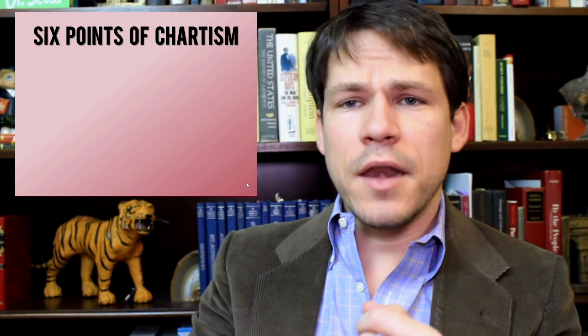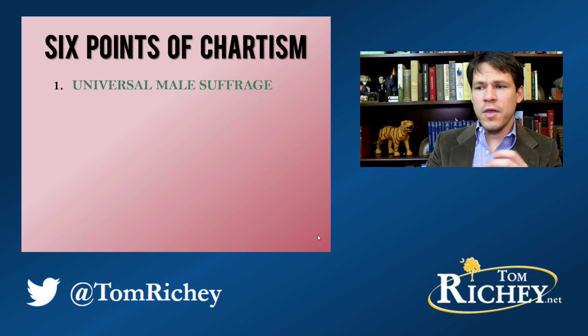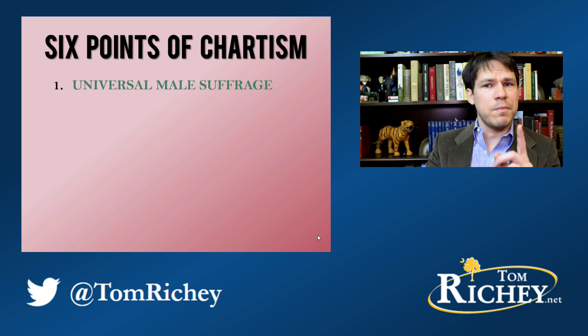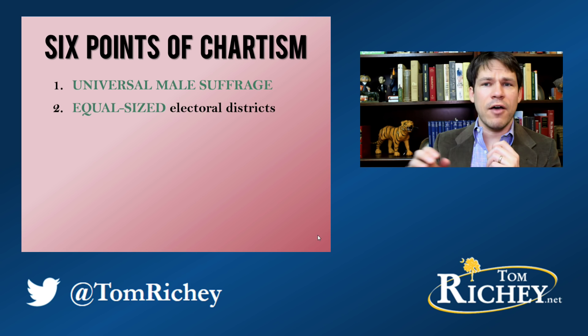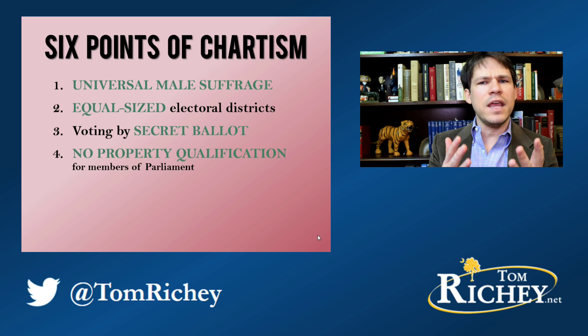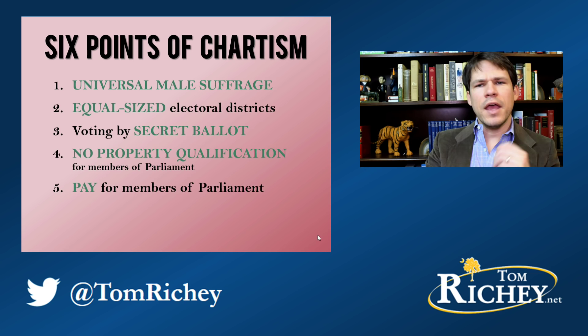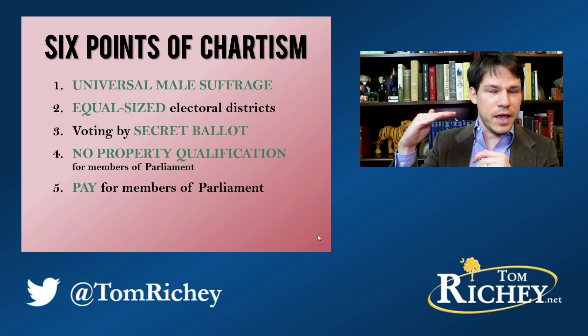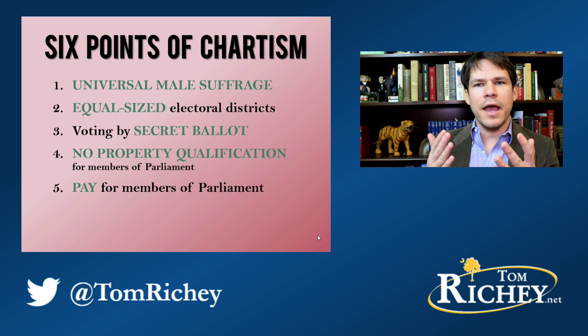The six points of Chartism are: first, universal male suffrage — that every man over 21 should be able to vote. Second, equal size electoral districts, so one district shouldn't have significantly more or fewer people than another. Third, voting by secret ballot. Fourth, no property qualification for members of Parliament — anybody should be eligible to run. Fifth, pay for members of Parliament. Before this, Parliament wasn't paid, and since it was a job that didn't pay anything, you had to be wealthy to serve.